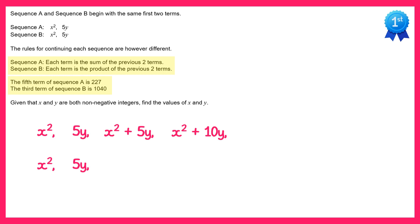And to get the fifth term we add the third and the fourth term, so we add x squared plus 5y and x squared plus 10y, which is 2x squared plus 15y. And we also want the third term of this second sequence here, so we just multiply the first two terms and that's 5x squared y.